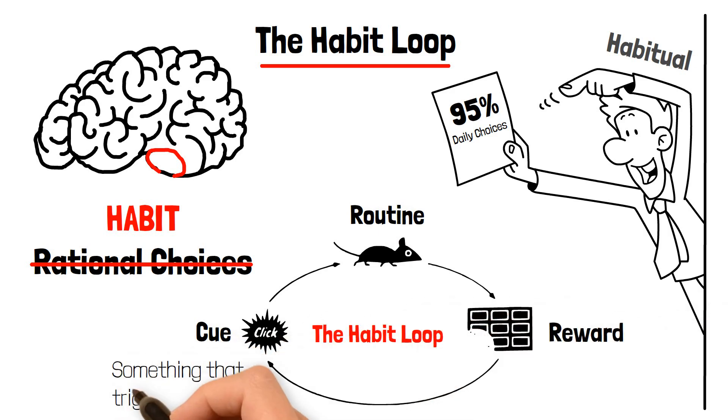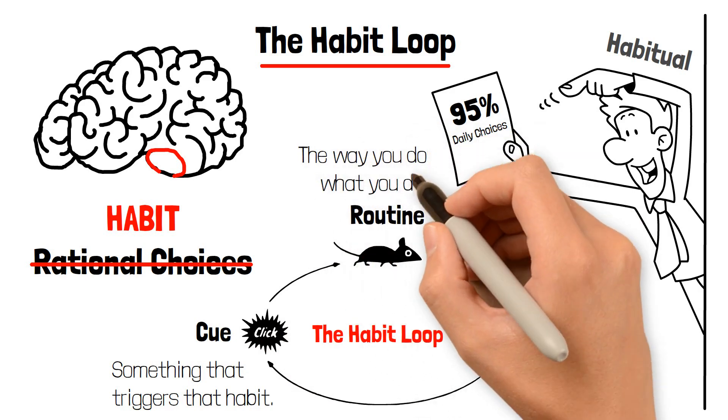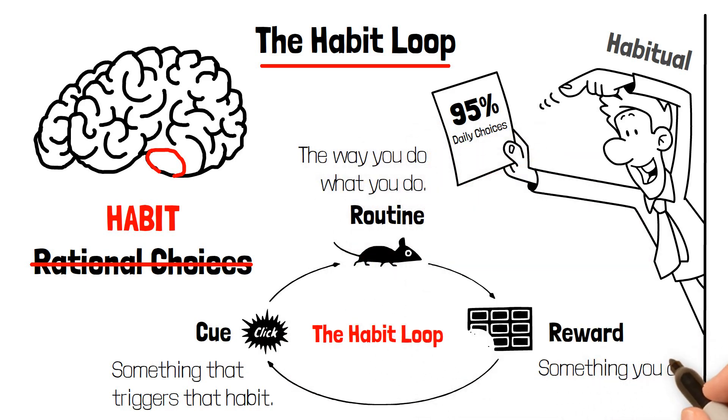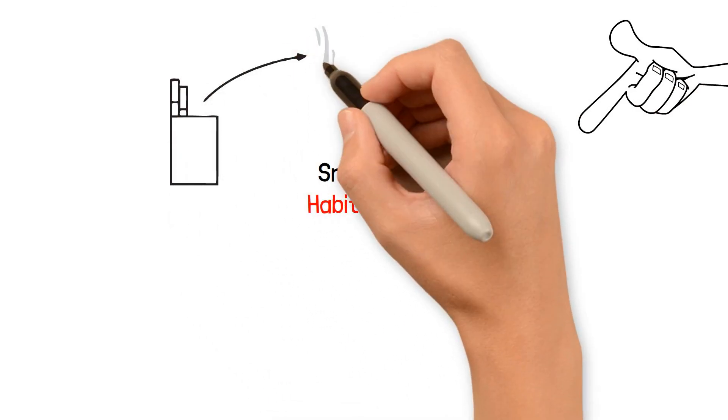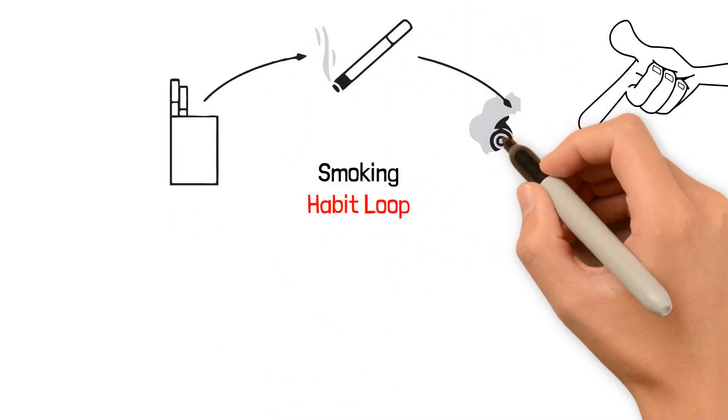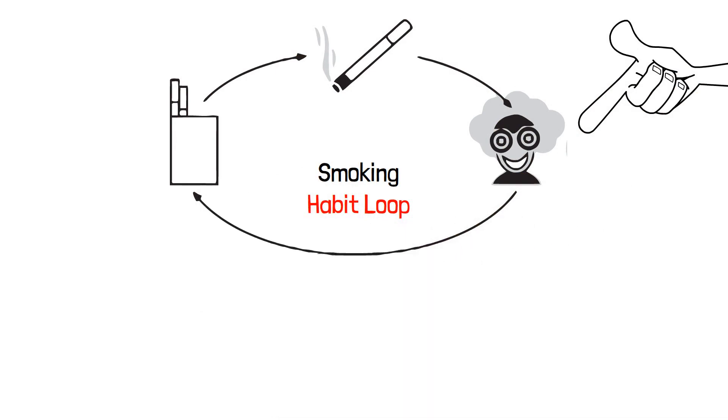A cue: something that triggers the habit. A routine: the way you do what you do. A reward: something you get at the end. Let's try another example. Look at the smoking habit. Cue: a pack of cigarettes. Routine: smoking a cigarette. Reward: a hit of nicotine. Get it?